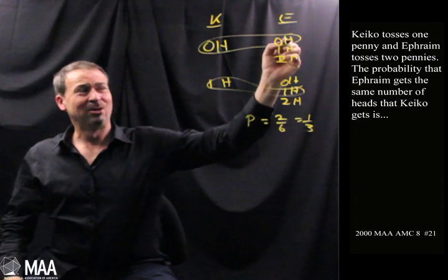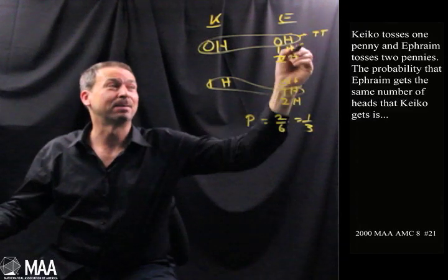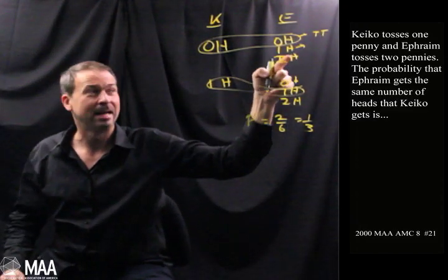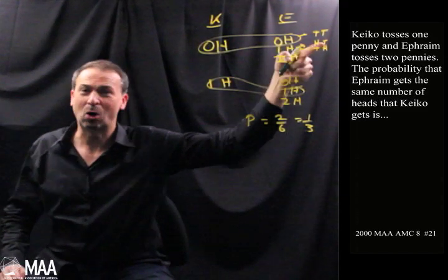I guess, look at this. I mean, there's only one way Ephraim can get zero heads. He has to get tails tails. But the trouble is, I'm pausing over the one heads part. He can either get heads and a tails or a tails and a heads. There's actually two options hidden in there.